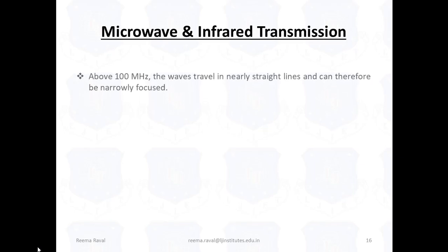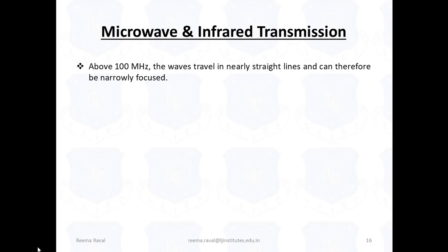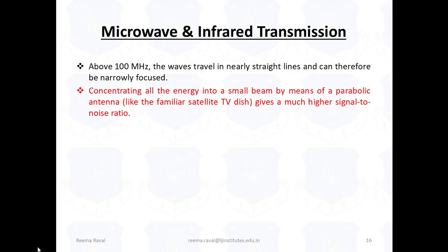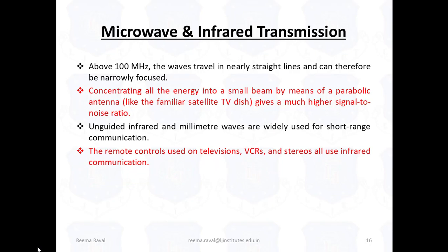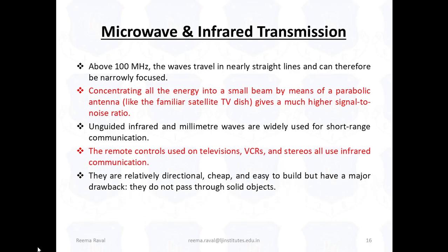Next is microwave and infrared transmission. Above 100 MHz, in the range of GHz, the waves travel in nearly straight lines and can therefore be narrowly focused. Concentrating all the energy into a small beam by means of a parabolic antenna gives a much higher signal to noise ratio, for example the familiar satellite TV dish. Unguided infrared and millimeter waves are widely used for short-range communication. The remote controls used on televisions, VCRs and stereos all use infrared communications. They are relatively directional, cheap and easy to build but have a major drawback, they do not pass through solid objects.